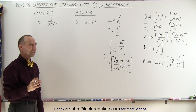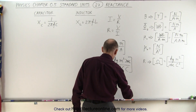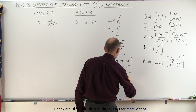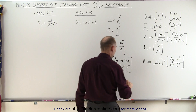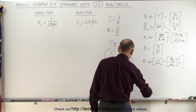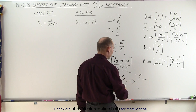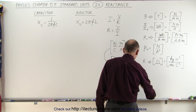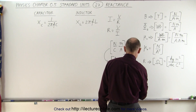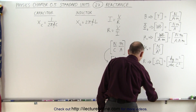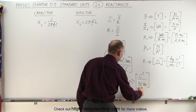What about capacitance? Capacitance, by definition, is equal to the charge divided by the voltage. The units for charge are coulombs, and the unit for voltage is newtons per coulomb times distance. That gives coulomb squared in the numerator and newtons per coulomb times meters in the denominator — so the units for capacitance are coulombs squared per newton times meter.